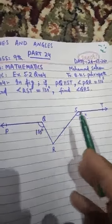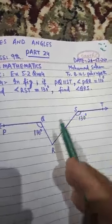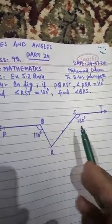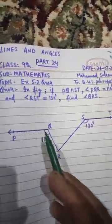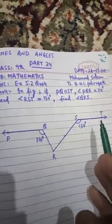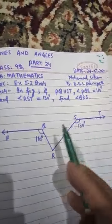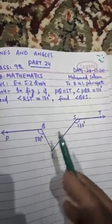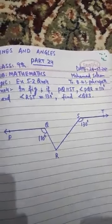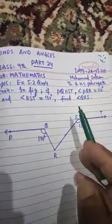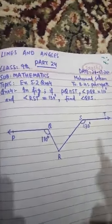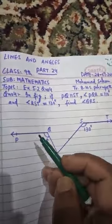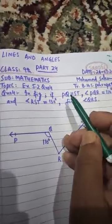They will not meet each other if we extend lines PQ and ST. If we produce these lines, they will never meet or intersect each other because they are parallel.